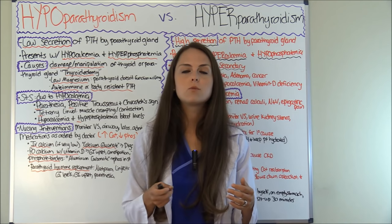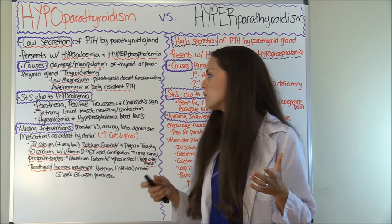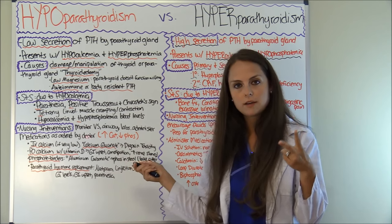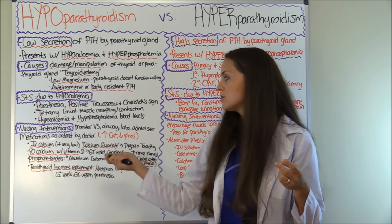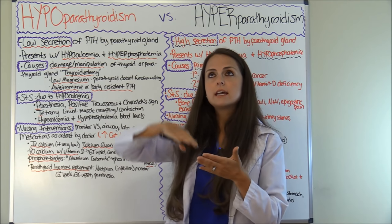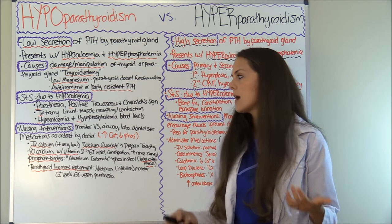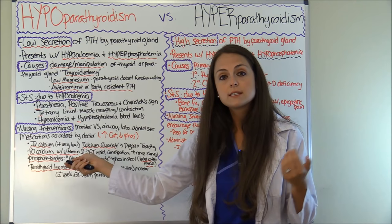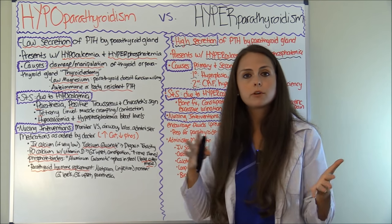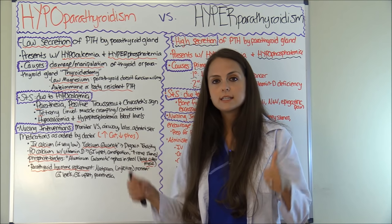Now let's look at nursing interventions for hypoparathyroidism. As a nurse, we are going to monitor vital signs and the airway, especially because of the tetany. Monitor labs and administer medications as ordered. The goal of medications is to increase calcium levels and decrease phosphate levels. If the calcium level is severe enough, the physician may order IV calcium like calcium gluconate. One thing to remember: if the patient is on digoxin, IV calcium can increase digoxin toxicity.